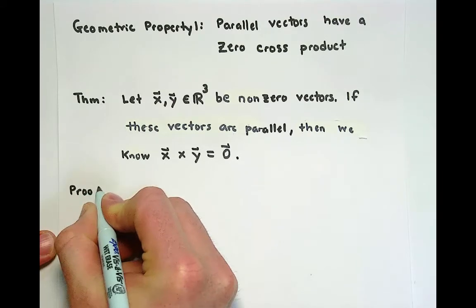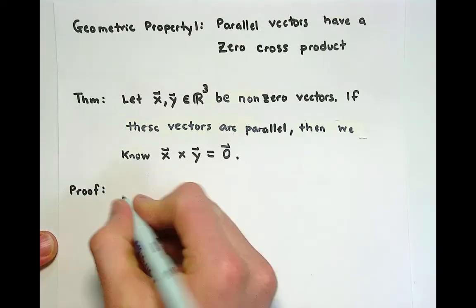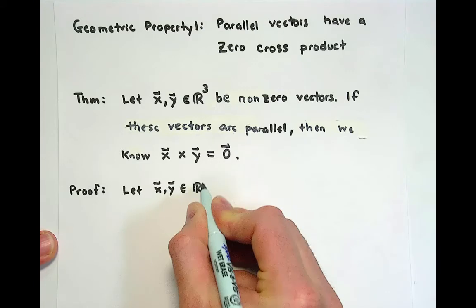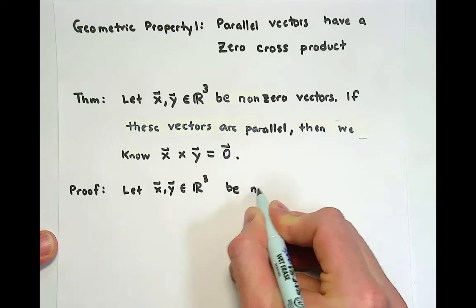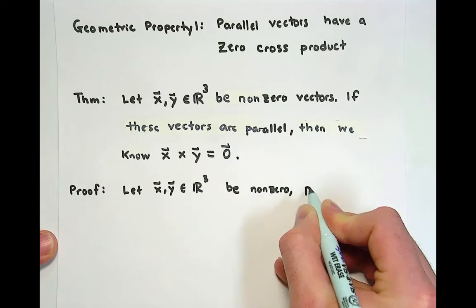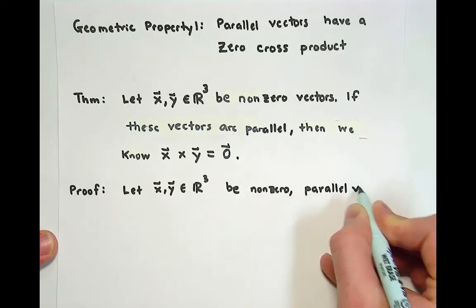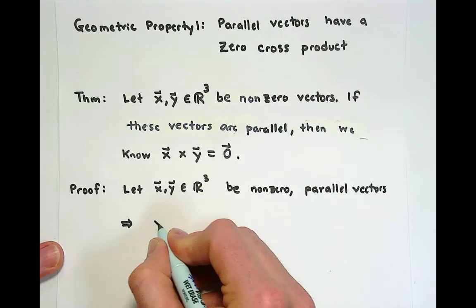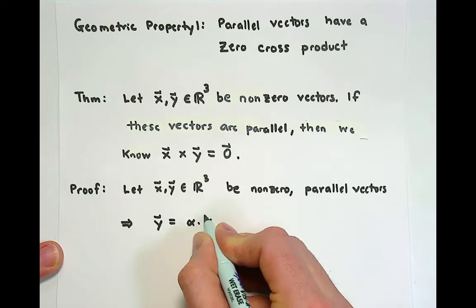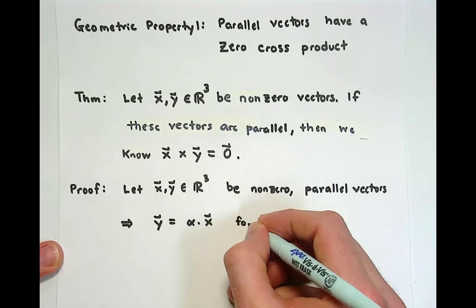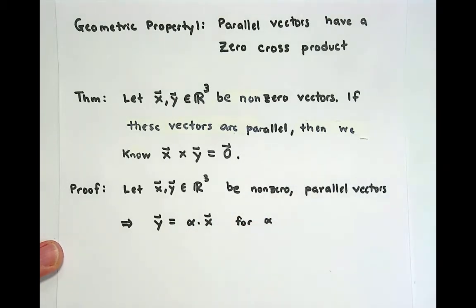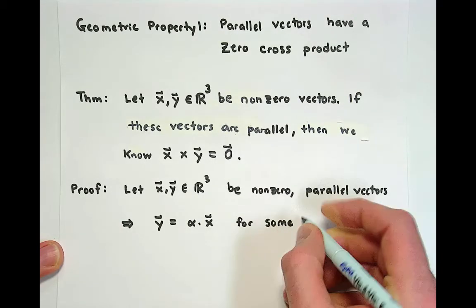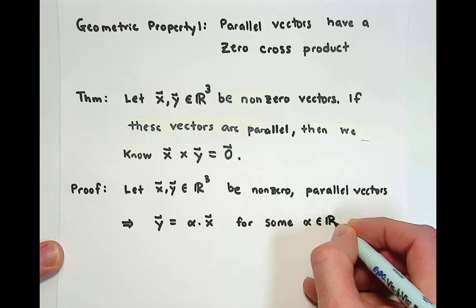The proof of this theorem depends on the definition of parallelity. So let x and y be nonzero parallel vectors, which implies immediately that we can write y as a scalar multiple of x for some scalar alpha in R.